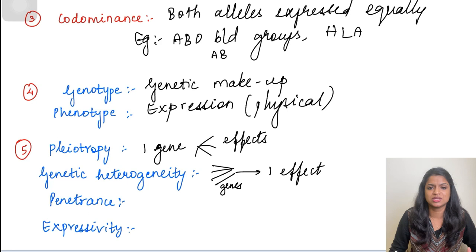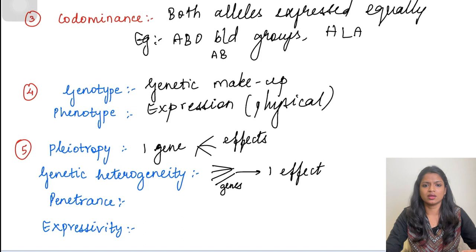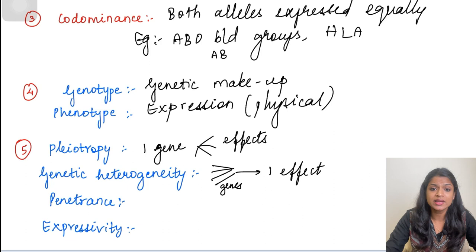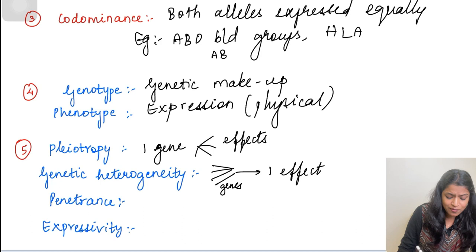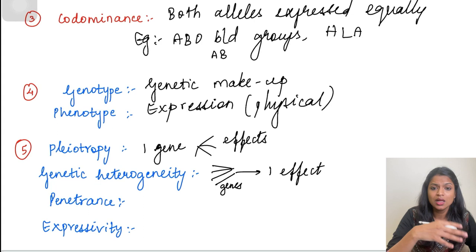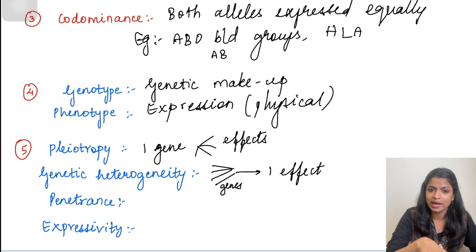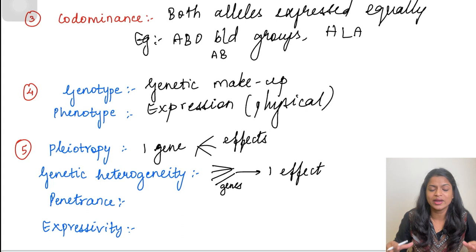Then comes penetrance and expressivity. Penetrance is about how a mutated gene is expressed in a person. Complete penetrance means if you inherit the gene, you will definitely manifest the disease. Incomplete penetrance is a feature of autosomal dominant inheritance — even though you inherited the mutant gene, you may not express the trait. Expressivity refers to the variability of effects when a mutant allele is received. Variable expressivity is a feature of autosomal dominant diseases. So incomplete penetrance and variable expressivity are features of autosomal dominant diseases.